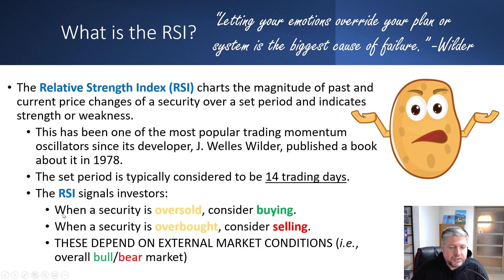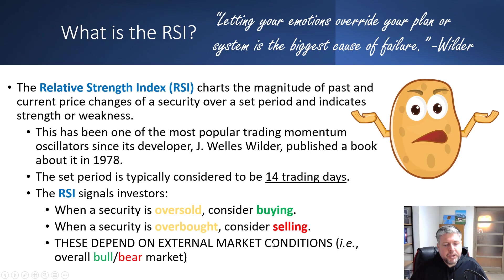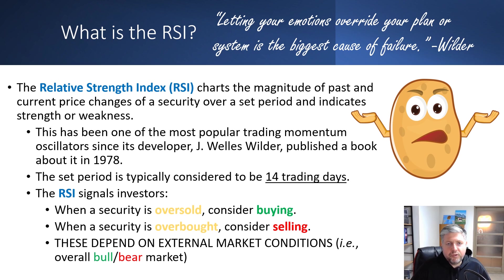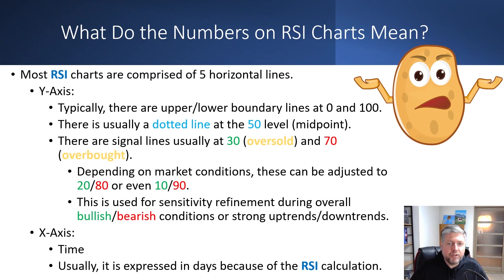The RSI signals investors when a security is oversold — you consider buying — and when a security is overbought — you consider selling. When the graph on the RSI chart drops below a certain point it's considered oversold, and there's likely to be a reversal the other way, so that's a good buying opportunity. Likewise, when it goes to the top of the chart, it's overbought and there's likely to be a reversal — a good selling opportunity. These depend heavily on external market conditions like an overall bull or bear market. Since the great financial collapse in 2009, we've been in a protracted bull market, so you've actually seen RSIs trading at the top end of their levels.